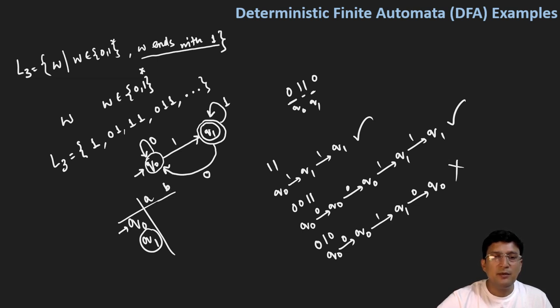So in q0 on getting zero we remain at q0, on one we are moving to q1.